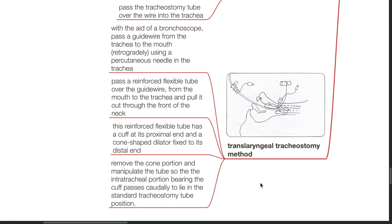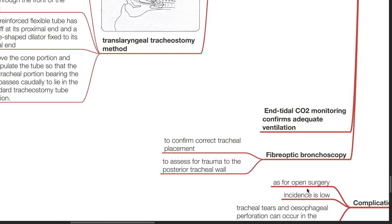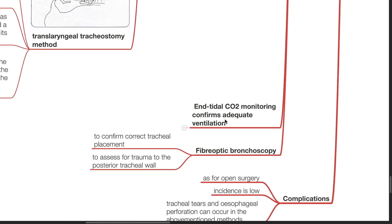Translaryngeal tracheostomy method — Fantoni: with the aid of a bronchoscope, pass a guide wire from the trachea to the mouth retrogradely using a percutaneous needle in the trachea. Pass a reinforced flexible tube over the guide wire from the mouth to the trachea and pull it out the front of the neck. This reinforced flexible tube has a cuff at its proximal end and a cone-shaped dilator fixed to its distal end. Remove the cone portion and manipulate the tube so that the intratracheal portion bearing the cuff lies in the standard tracheostomy tube position. End-tidal CO2 monitoring confirms adequate ventilation. Fibre-optic bronchoscopy confirms correct tracheal placement and assesses for trauma to the posterior tracheal wall.